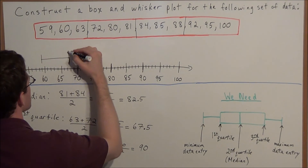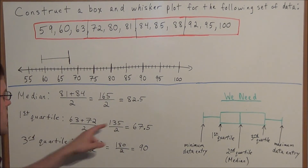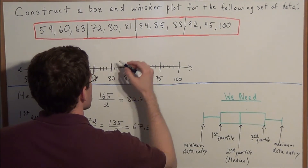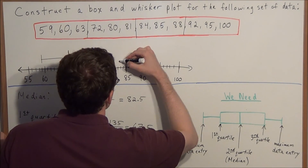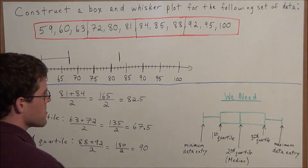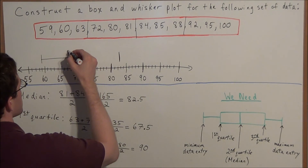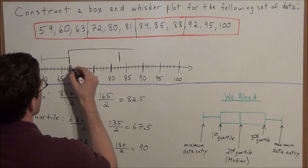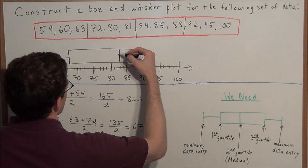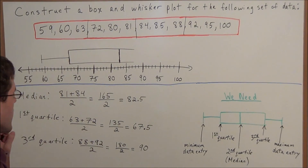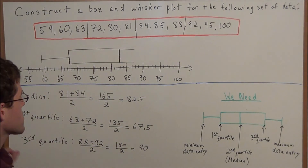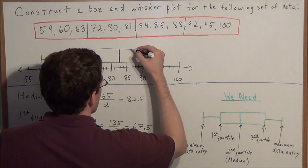Next we mark the median at 82.5 on the number line — that's smack in the middle of 82 and 83. This becomes the slice inside the box, and we extend it to span the full height of the box. The third quartile at 90 tells us where the box ends, so we close the box off at 90.